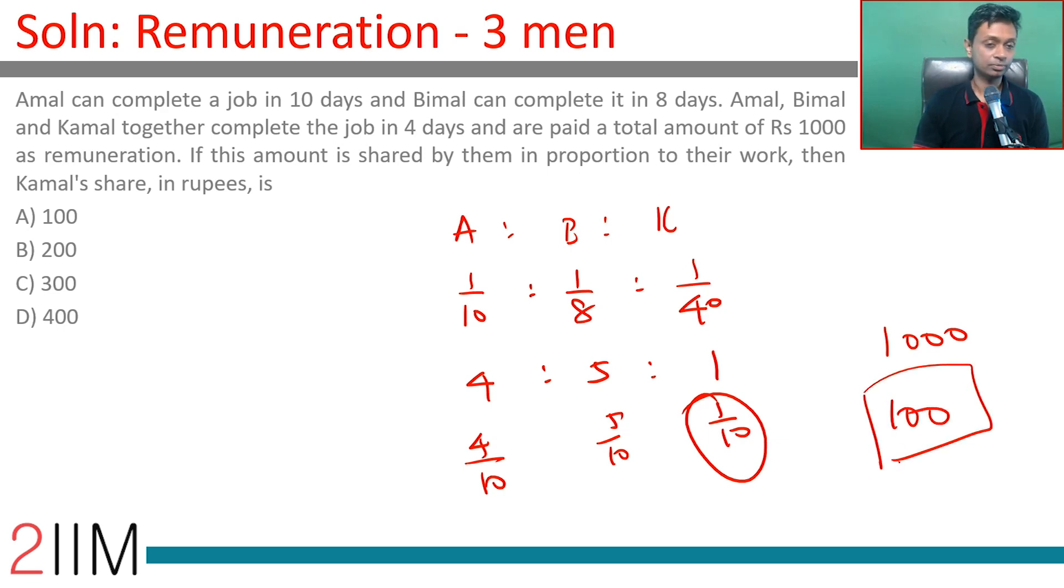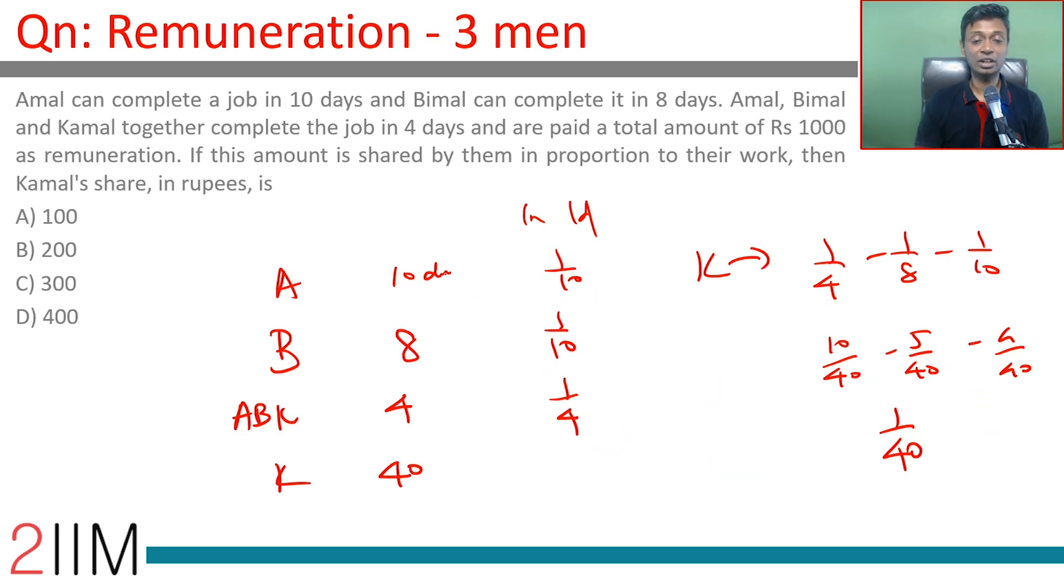Key thing here: if you're given the number of days to complete a task, think about what gets done in one day. That's the rate - so 1 by 10, 1 by 8.